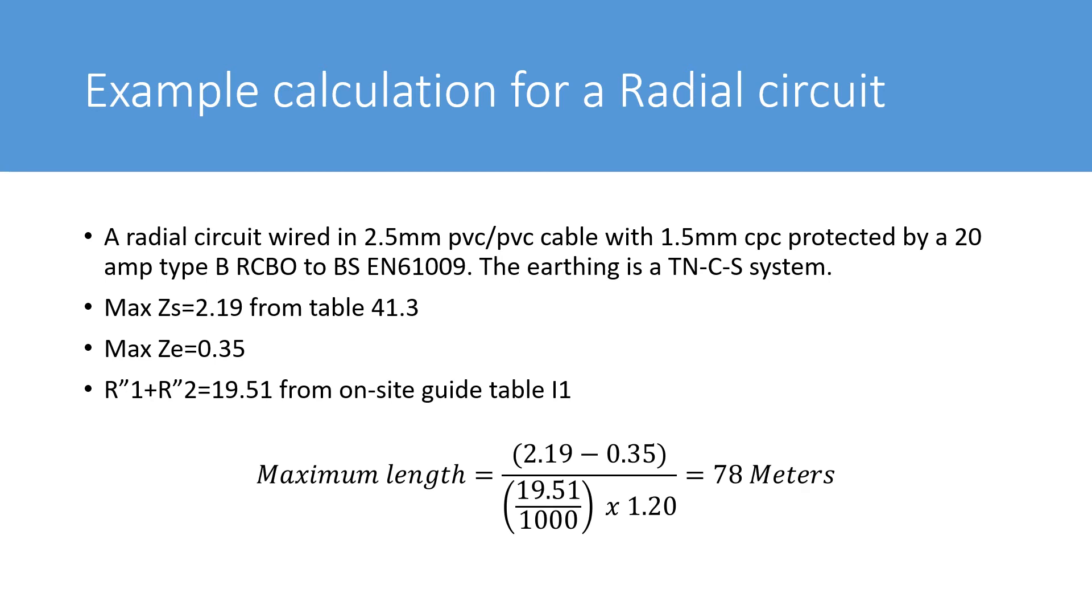So if you look at the table, you'll see a list of different sizes of cable, combinations of different line conductors and CPCs. And if you look for the 2.5 mm line conductor with a 1.5 mm CPC, you'll get the value of 19.51.